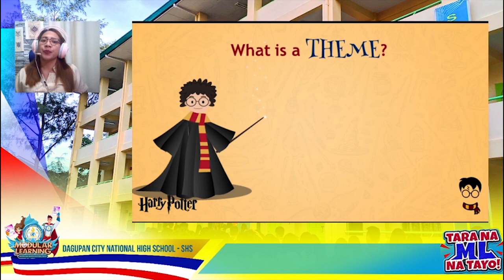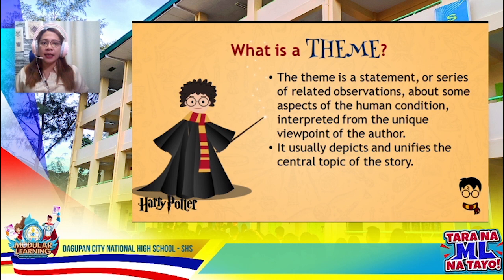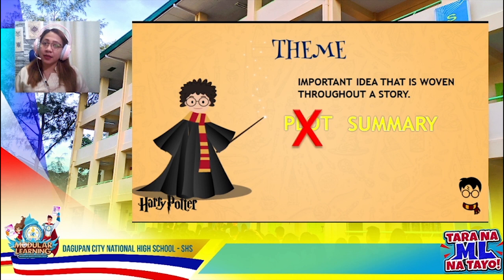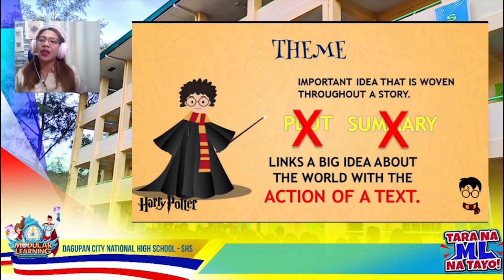So what do we mean when we say theme? Let me define theme for you. When we say theme, it is a statement or series of related observations about some aspects of the human condition interpreted from the unique viewpoint of the author. It usually depicts and unifies the central topic of the story. It is an important idea that is woven throughout a story — the main idea we get after reading the whole story. The theme links a big idea about the world with the action of a text.